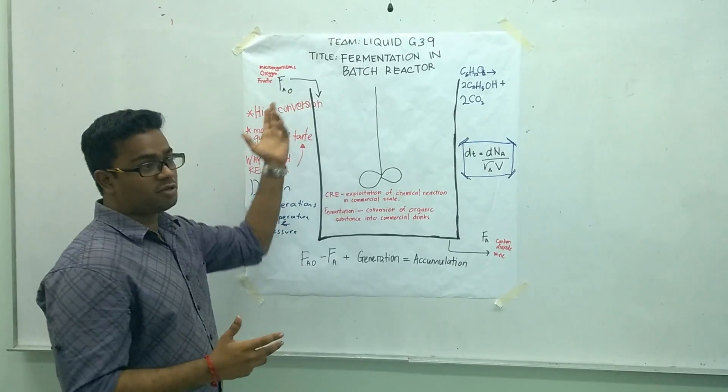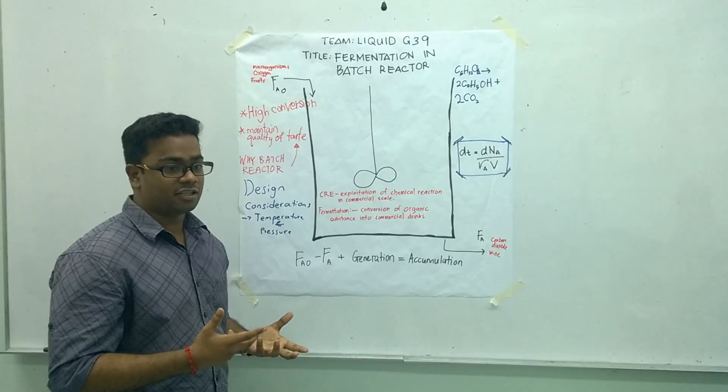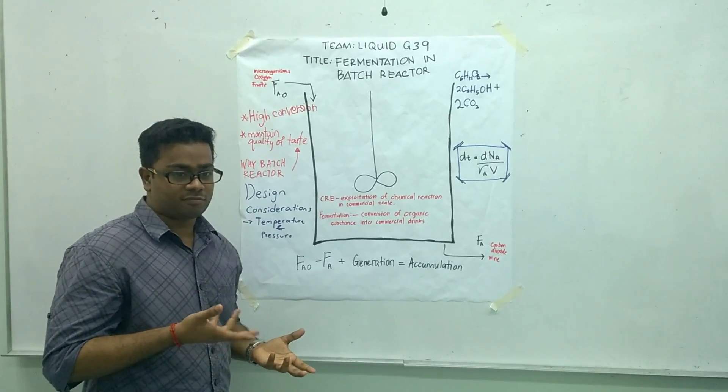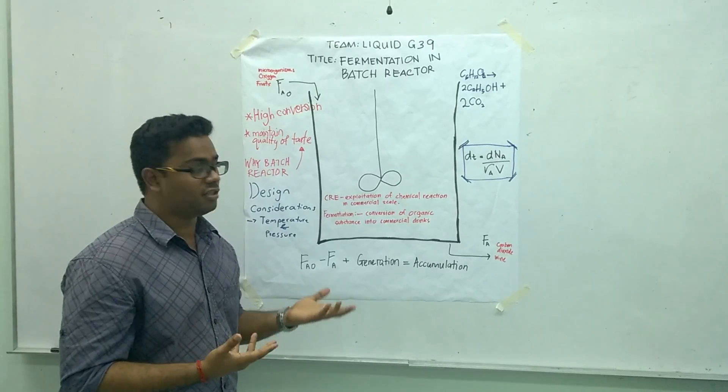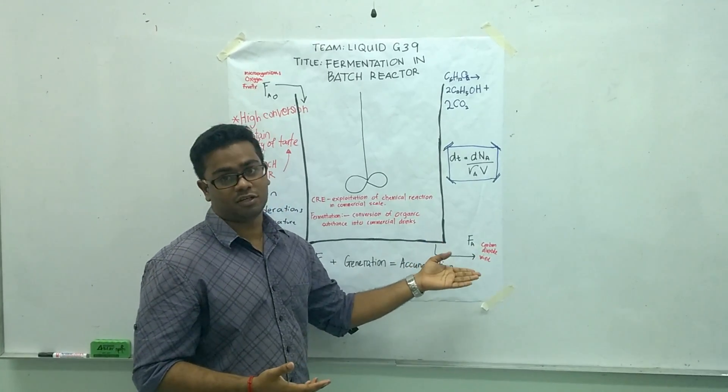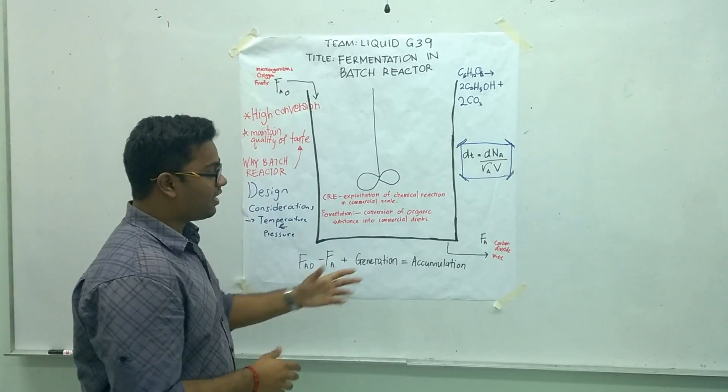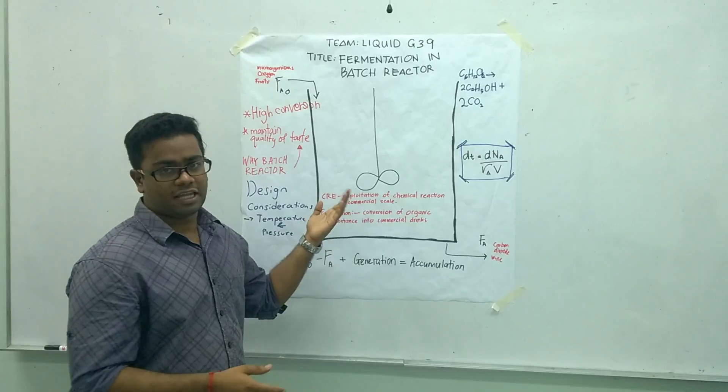Microorganism allows the fermentation on oxygen, gives the microorganism the ability to breathe, and then release the CO2, which leads to the output, which is the CO2 and also the wine. The generation in this process is the wine itself.